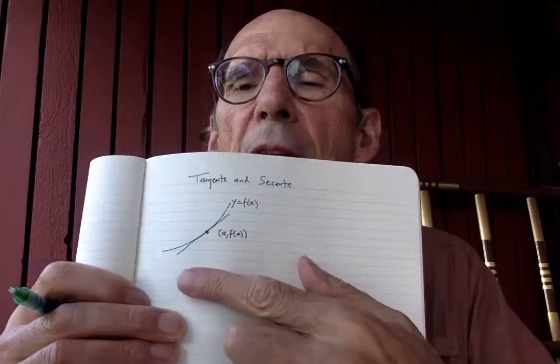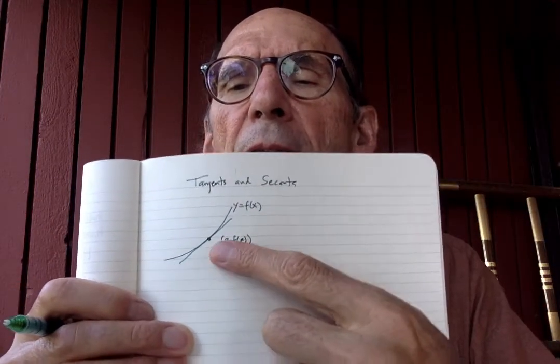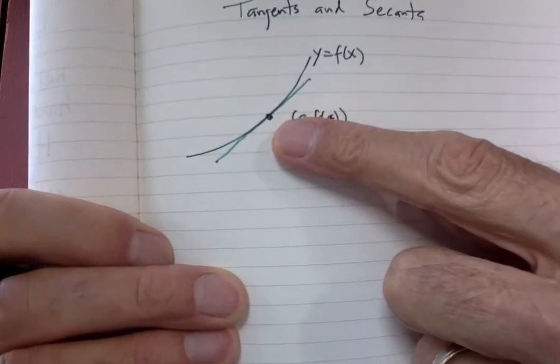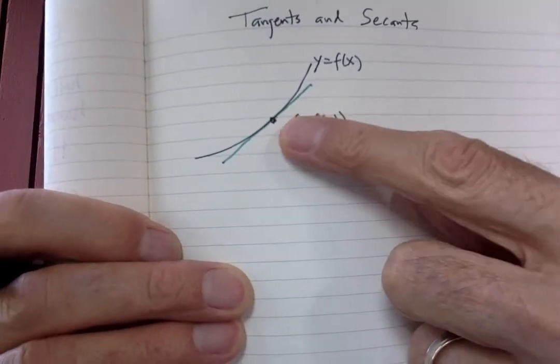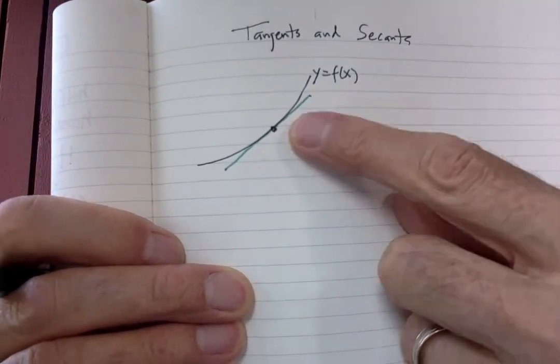So if the change in x is not very big, you can hardly see the difference between the green tangent line and the black graph. So that's the tangent line, and the interesting question is: what's the slope?